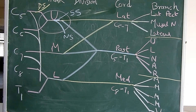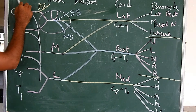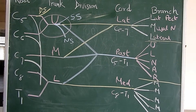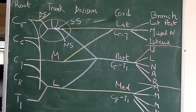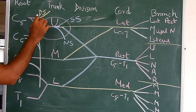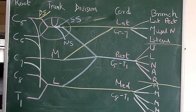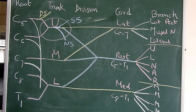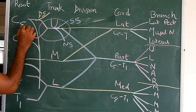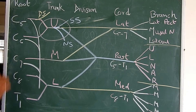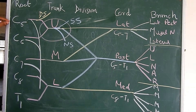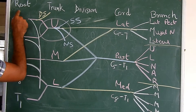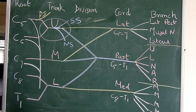Now we learn about the branches of the roots. From C5, the first branch is the dorsal scapular nerve, which supplies the rhomboid major and minor — that is why it is also known as the nerve to the rhomboids. The second nerve is the long thoracic nerve, also known as the nerve to serratus anterior, with root value C5, C6, and C7. Additionally, C5 gives a contribution to the phrenic nerve.